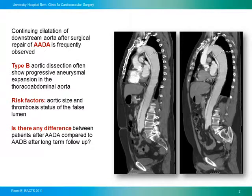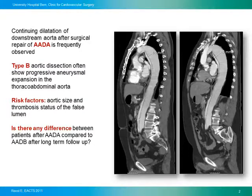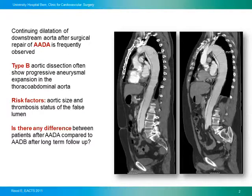On the right you can see the follow-up CT scan two and three years after repair for type A aortic dissection. As you will see, there is a continuing dilatation of the downstream aorta after surgical repair for type A aortic dissection. We can frequently observe this phenomenon, and the same is true for patients with a type B aortic dissection, which also often show a progressive aneurysmal expansion of the thoracoabdominal aorta during follow-up. In previous studies, several risk factors have been identified, such as aortic size and thrombosis status of the false lumen, and we were asking the question whether there was any difference in the follow-up of these patients.